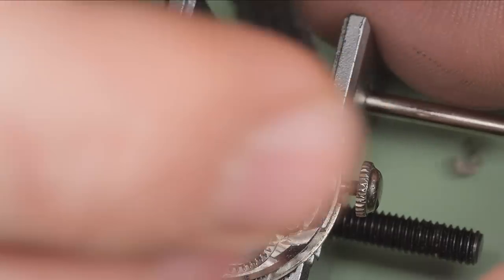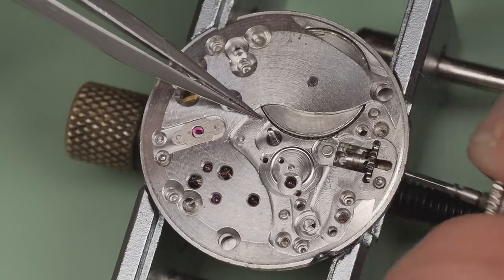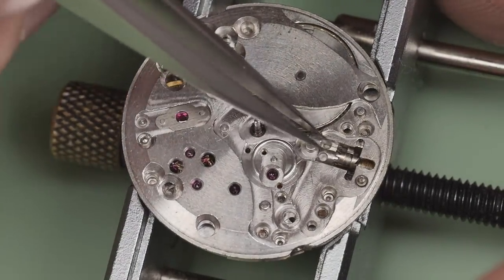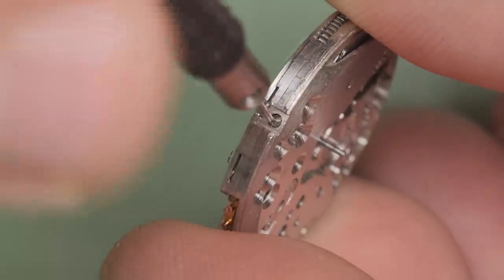Yoke spring is next to come out. And then I can grab the yoke itself. With the movement flipped over to the watchmaker side, I can unscrew the setting lever completely. The crown and stem are now removed. The winding pinion and clutch wheel are removed. Much easier when there isn't a ton of grease like in the caliber 688 video.